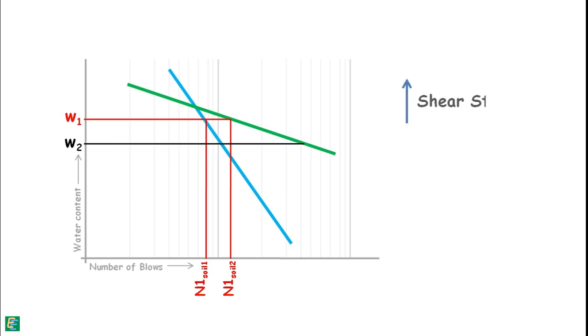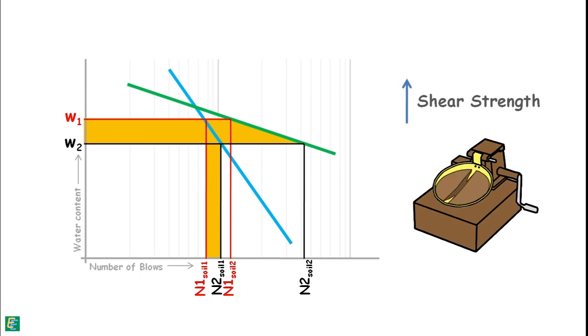And now Soil1 flows at N2 Soil1 number of blows and Soil2 flows at N2 Soil2 number of blows. It is clear that for the same amount of water content reduction, Soil1 needs very less number of additional blows for it to cause flow in the Casagrande cup.